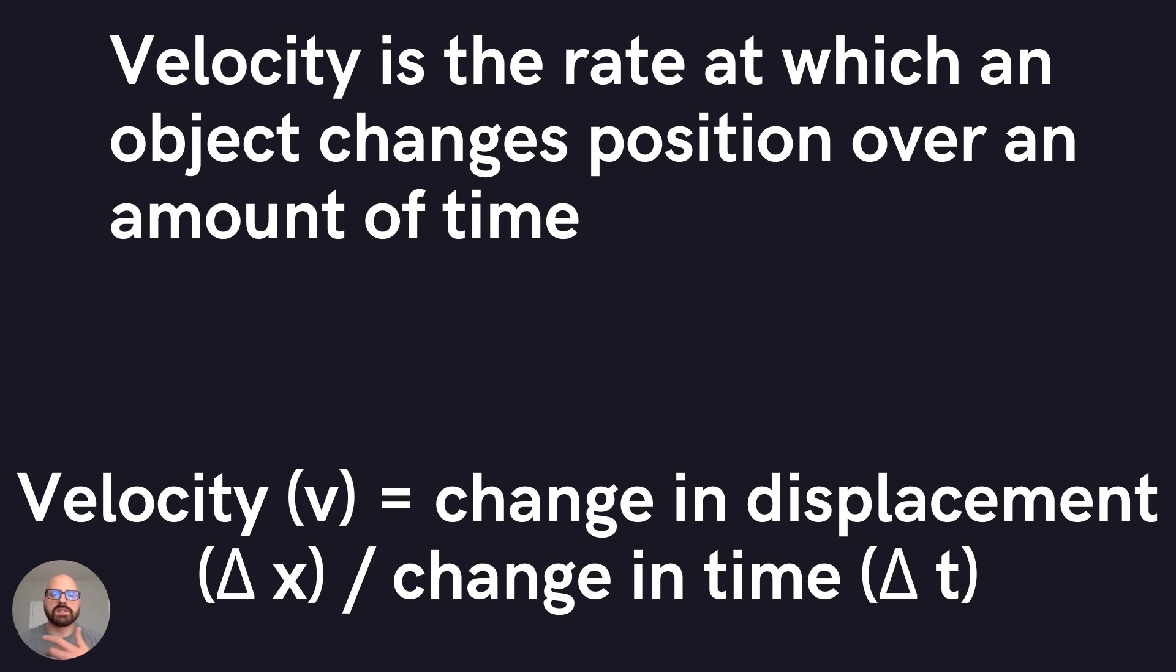So a velocity is essentially the object's speed and direction of motion. Speed just tells us how fast. It just tells us how fast something is going. So if we're going 25 miles per hour, it tells us its speed. If we say 25 miles per hour north, now we know its velocity.